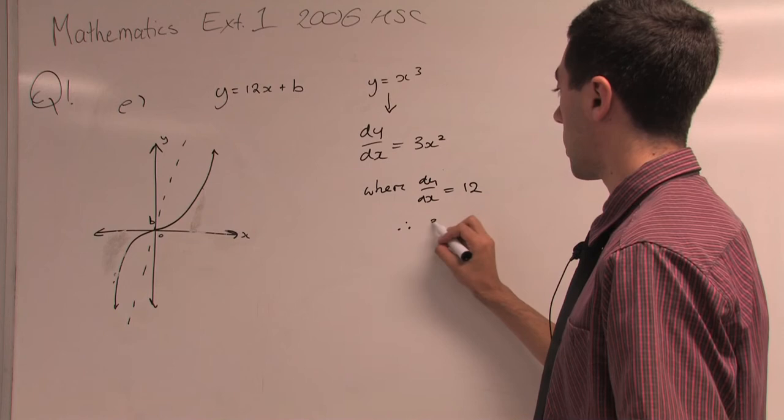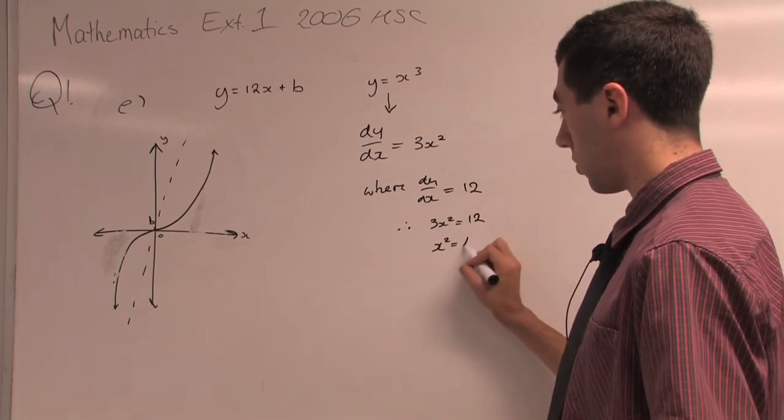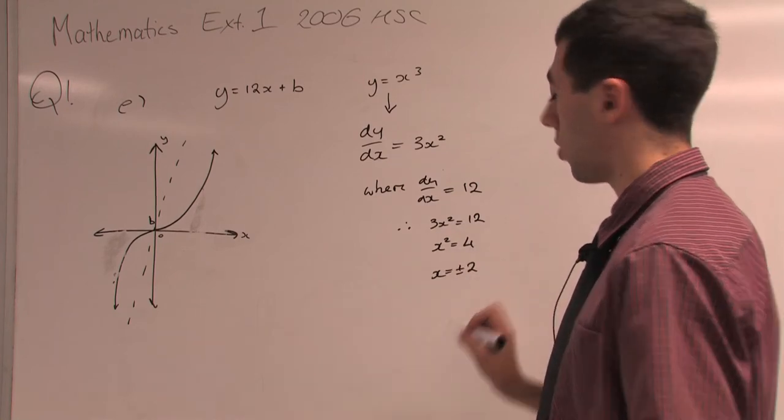Therefore we get 3x² = 12, so x² should be equal to 4, which gives us x = ±2.